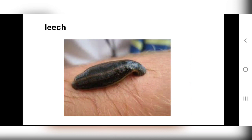Similarly, leech also sticks to the skin, attaches itself, and inserts its straw-like mouth into our skin to suck blood. Another animal we all know is elephant — it uses its trunk. The elephant uses its trunk to drink water, to bathe, and to pluck leaves. The trunk is like a straw, and it helps the elephant to suck water from a water body.